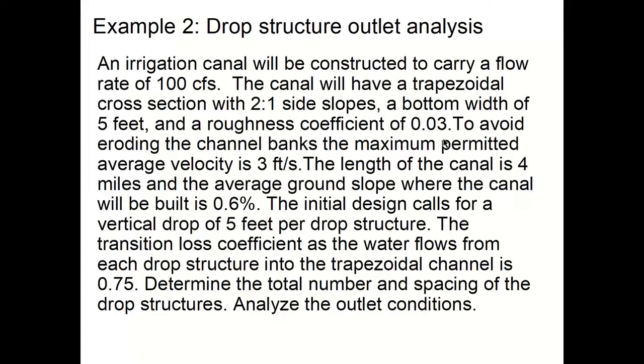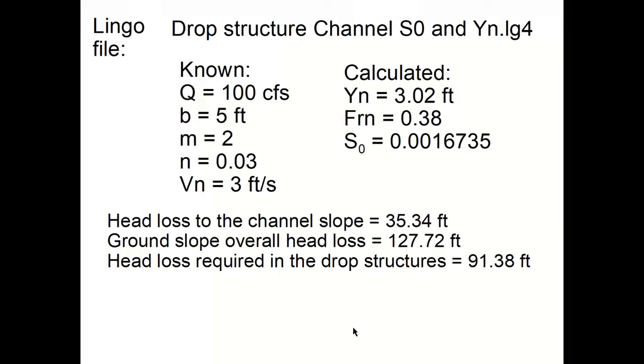The transition loss coefficient as the water flows from each drop structure into the trapezoidal channel is 0.75. Determine the total number and spacing of the drop structures and analyze the outlet conditions. We'll begin by looking at the channel which connects between the drop structures. We will determine the bottom slope and the normal depth, knowing that the maximum allowable average velocity is 3 feet per second.